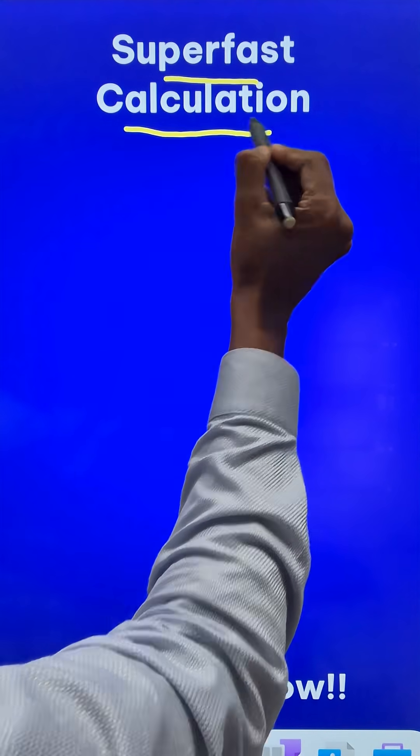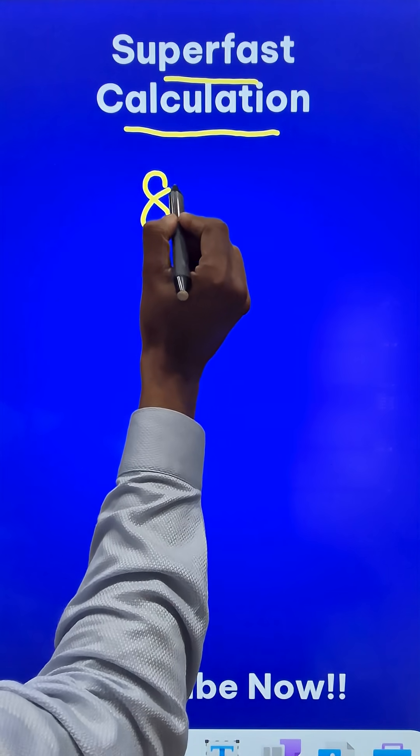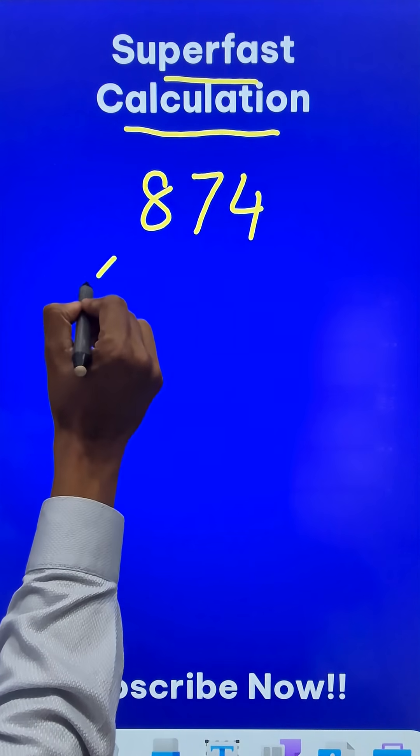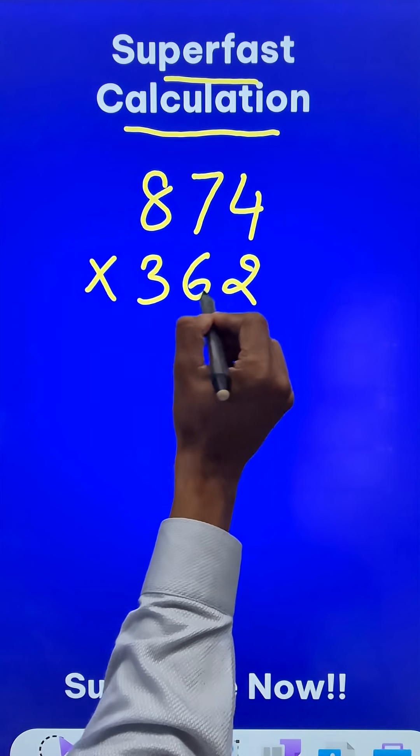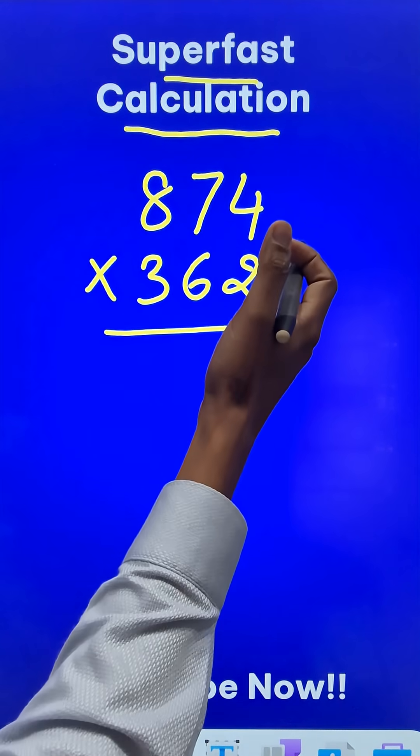Here is a super fast calculation trick. Suppose we need to multiply 874 by 362 and find the answer in a single line.